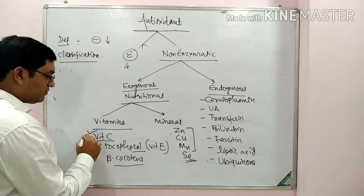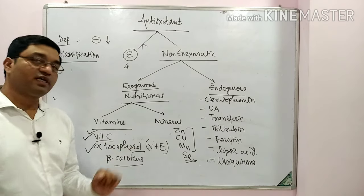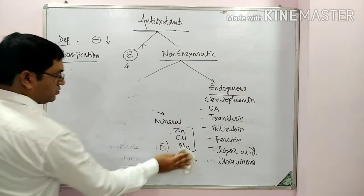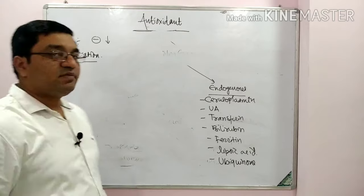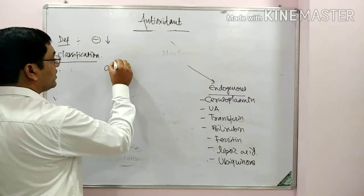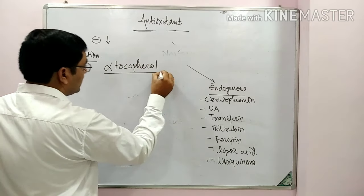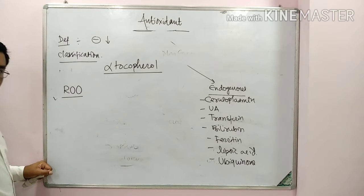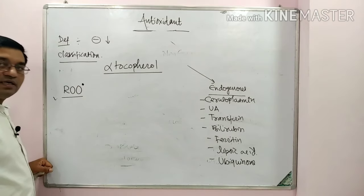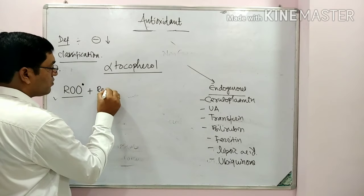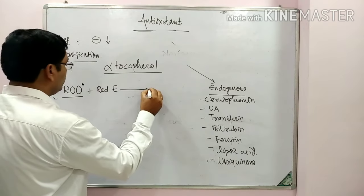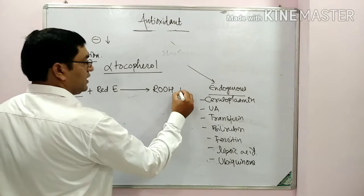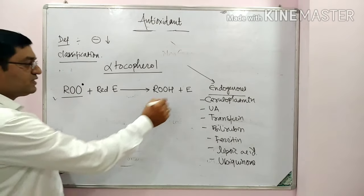Now, how do vitamin E and vitamin C act as antioxidants, and how does vitamin C spare vitamin E in antioxidant function? The most active form of vitamin E is alpha-tocopherol, which is a chain-breaking antioxidant. The lipid peroxide produced in lipid peroxidation combines with the reduced form of vitamin E to form lipid hydroxy peroxide and oxidized vitamin E.